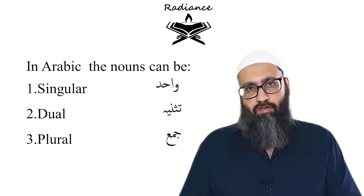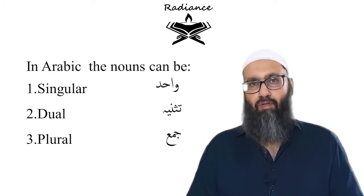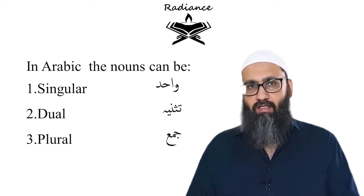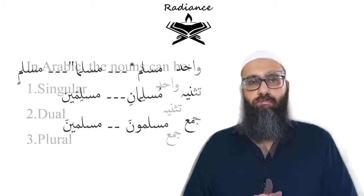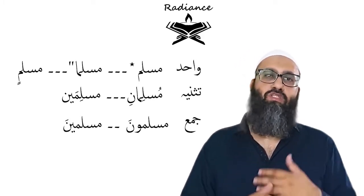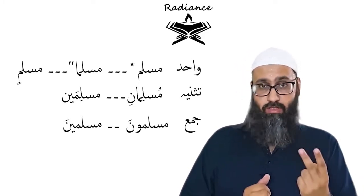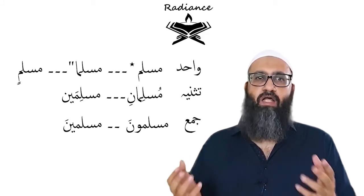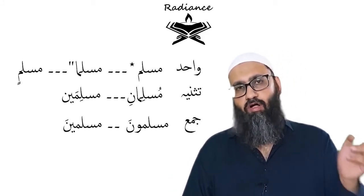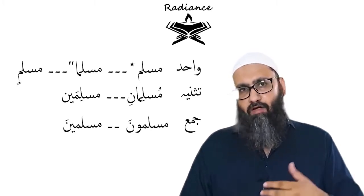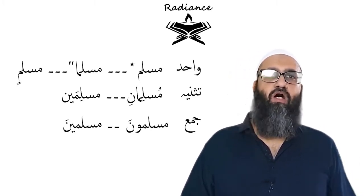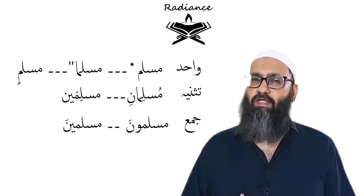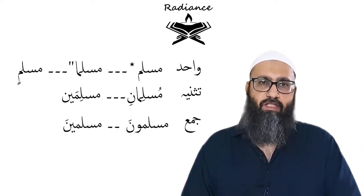In Arabic language, we have three different distributions of numbers. We have either singular, dual, and plural — and we call it Wahid, Tasniya or Musanna, and Jama. For example, you have one Muslim and you will call him Muslimun. Two Muslims: Muslimani or Muslimaini. Three or more Muslims: Muslimuna or Muslimina. We haven't discussed case yet, but Muslimuna and Muslimina are both for the plural form but have different cases. We will discuss case in the next one or two lessons.